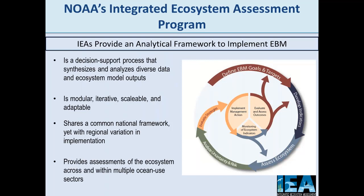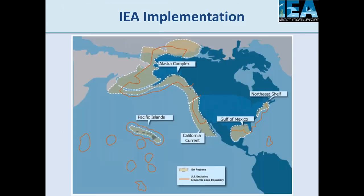Integrated ecosystem assessments are an analytical framework to implement ecosystem-based management. The process starts with EBM goals and targets; you develop indicators, assess ecosystem status and risk, and then evaluate management strategies to better achieve your EBM goals. Importantly, it's an iterative process, and there's an internal monitoring and evaluation component that blends naturally with adaptive management. When we originally proposed IEAs to NOAA in the white paper, they were sold as a process, a framework, a product, and a tool for providing scientific support for EBM — something I'll return to later.